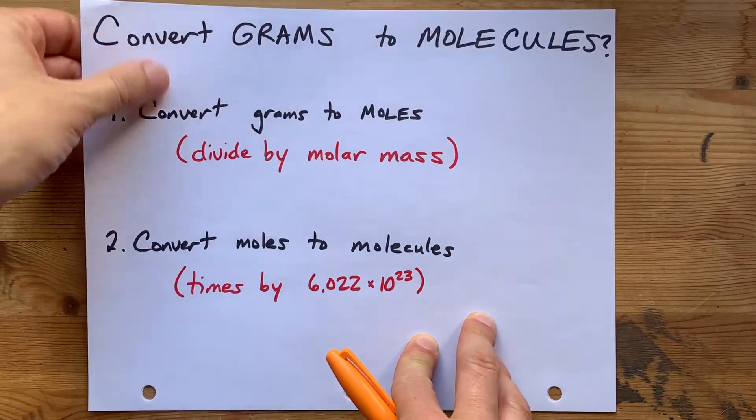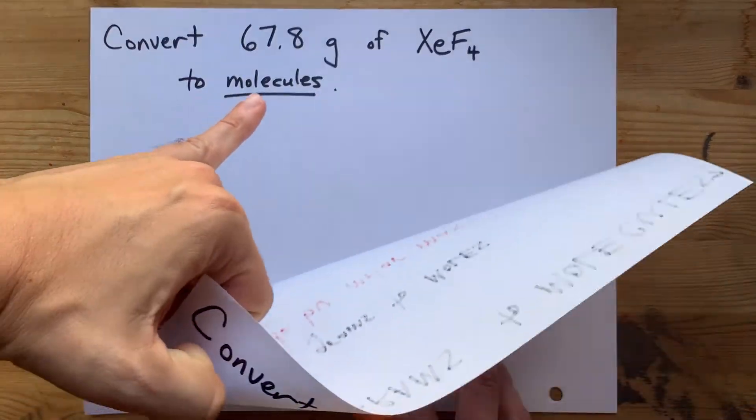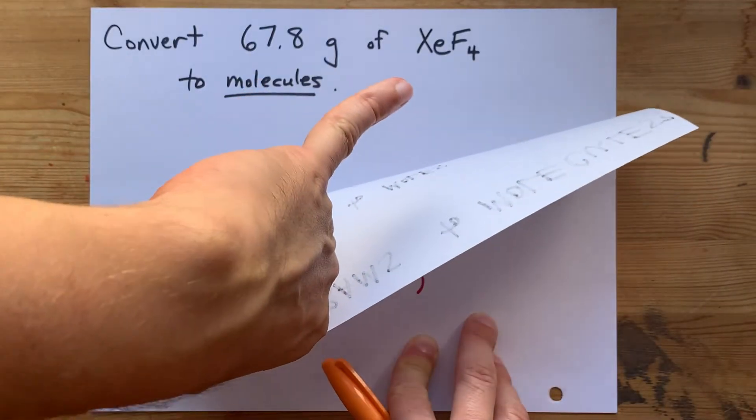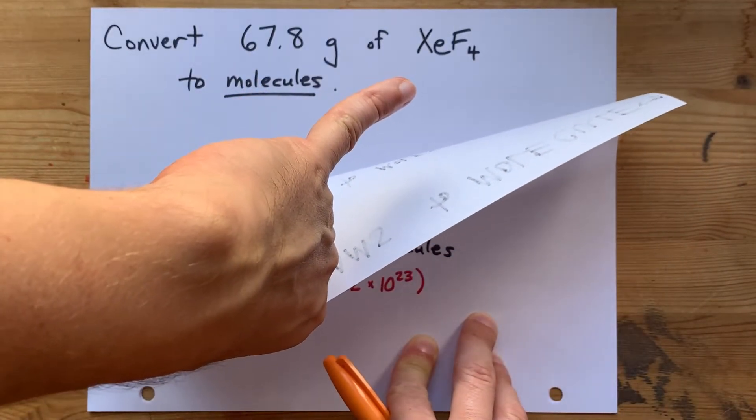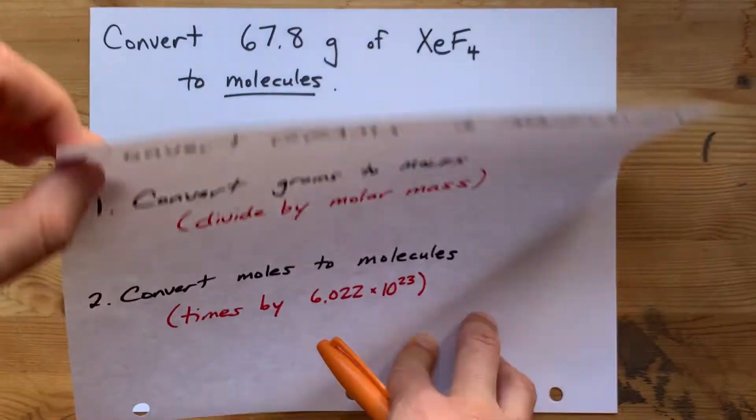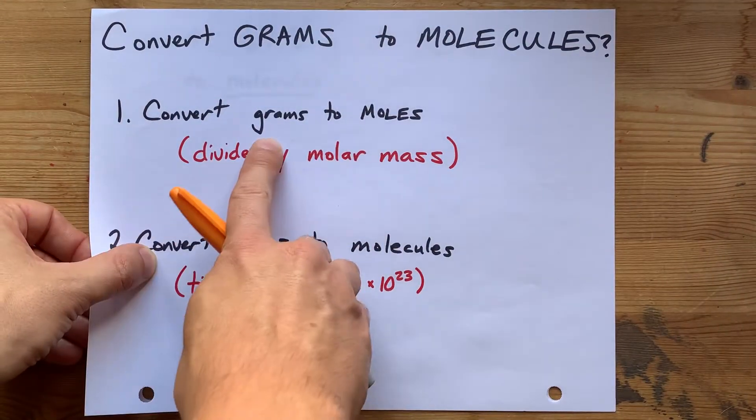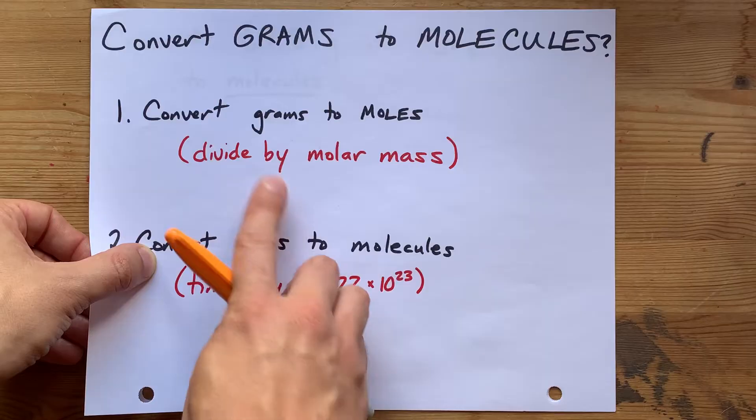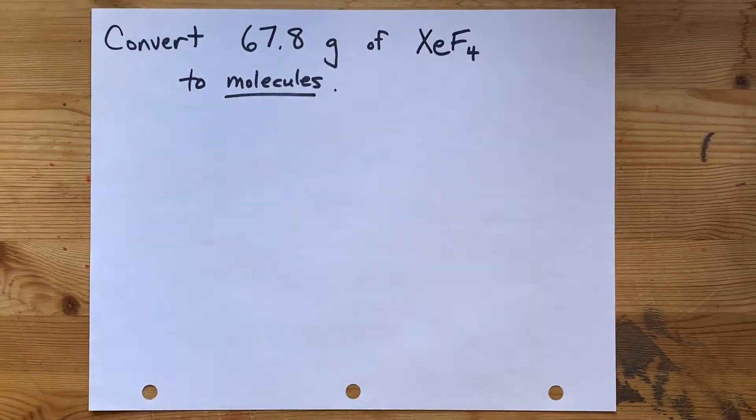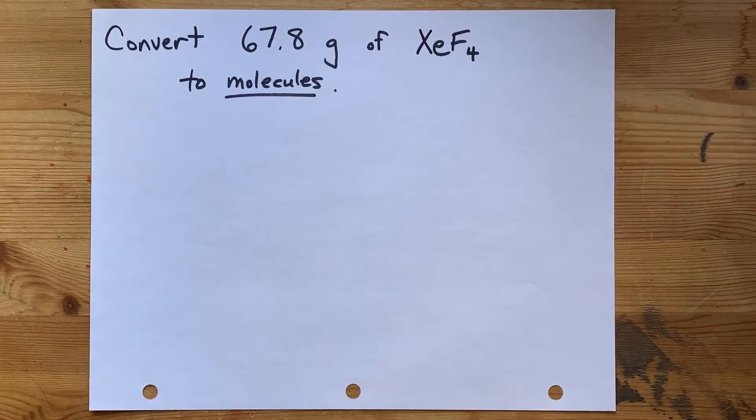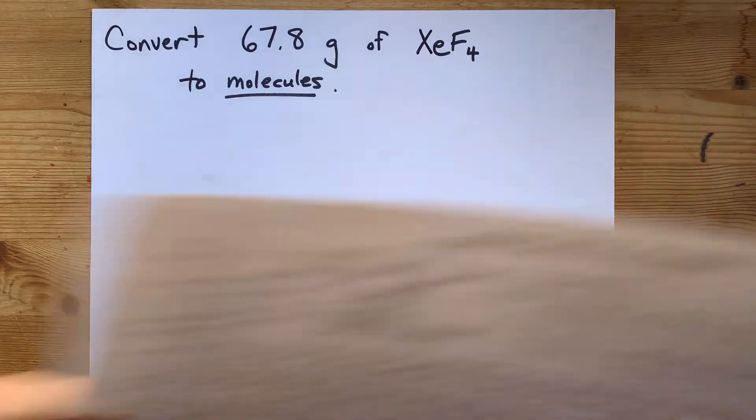Now, we're going to use this process together to convert 67.8 grams of xenon tetrafluoride, that's XeF4, to a number of molecules. Step one, convert the grams you were given to moles by dividing by the molar mass. But we have to figure out what the molar mass is first.